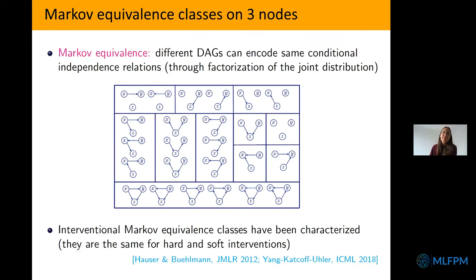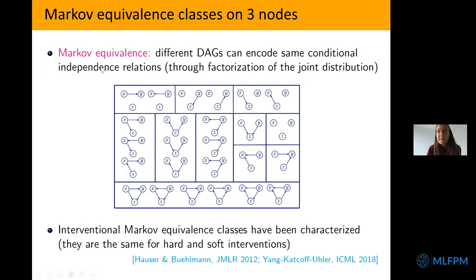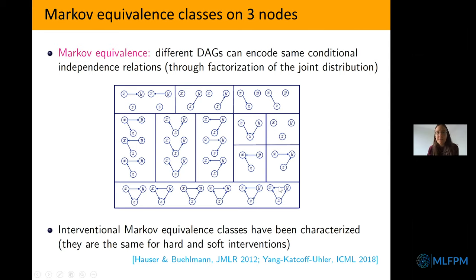We have to think about what we can even identify — what could you identify about the causal structure if you had infinite data? In the observational setting, even if every node is observed and you have infinite data, you cannot identify the full causal graph. You can only identify it up to a Markov equivalence class. For example, if you just have observational data, you cannot say whether X causes Y or Y causes X — all you know is that they're correlated.